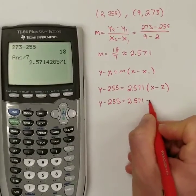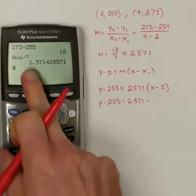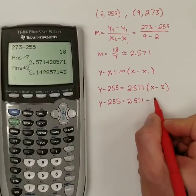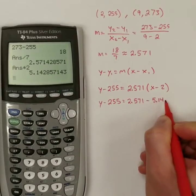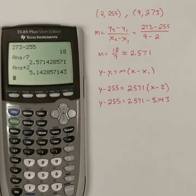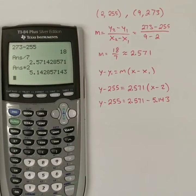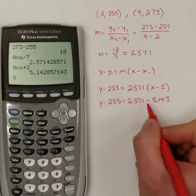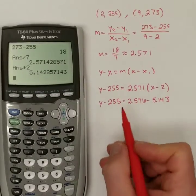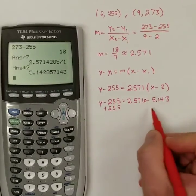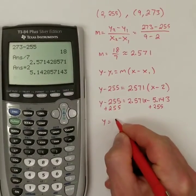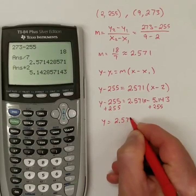2.571 minus... Now, if I distribute that, 2.571 times 2. When I distribute, I'm going to get 5.143 roughly. So, I'm rounding again to the nearest thousandth. And then I'm missing my x, aren't I? Right there.